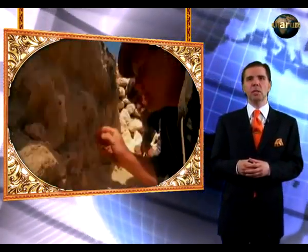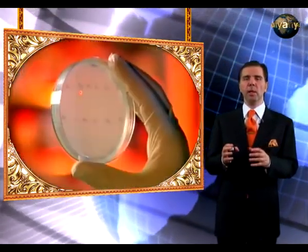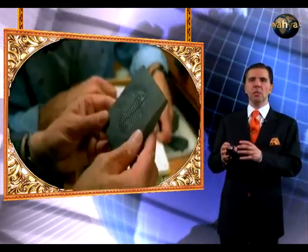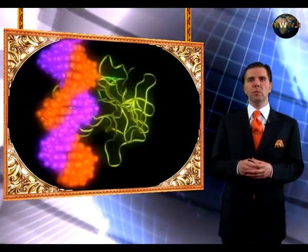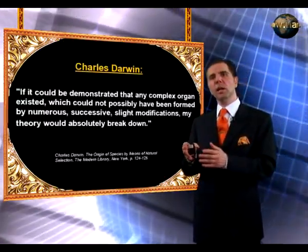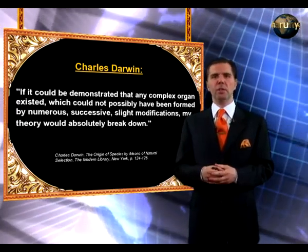We will talk about the irreducible complexity of complex organ systems. This is a term from the modern literature. Irreducible complexity means you cannot reduce a complex system to a more basic level. As you know, Charles Darwin is the founder of the theory of evolution, and he actually gives us the most concrete criteria to falsify his own theory.